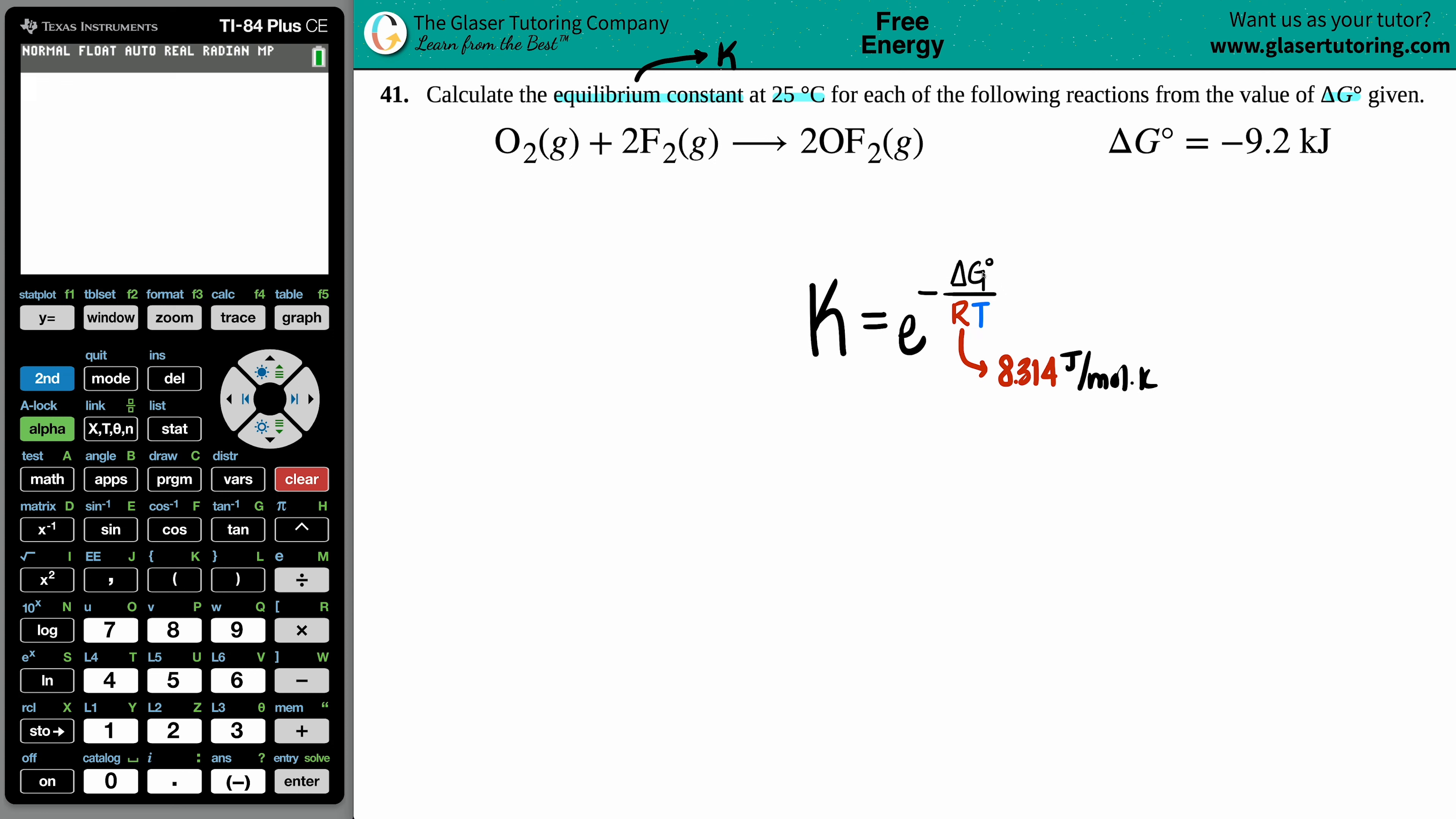This will give you a heads up as to what other units are allowed in this formula. Now take the delta G, for example. In the R value it's joules, but the delta G that they gave us was in kilojoules. That's okay, I just have to convert kilojoules to joules. That's just times by a thousand, so I could just take negative 9.2 and move the decimal over three spots to the right, which would be negative 9200 joules.